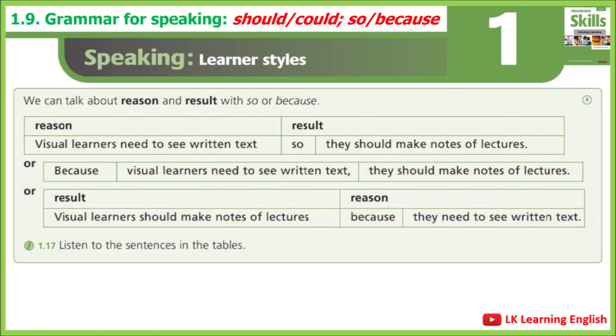Grammar box four — using 'so' and 'because.' Visual learners need to see written text, so they should make notes of lectures. Because visual learners need to see written text, they should make notes of lectures. Visual learners should make notes of lectures because they need to see written text.